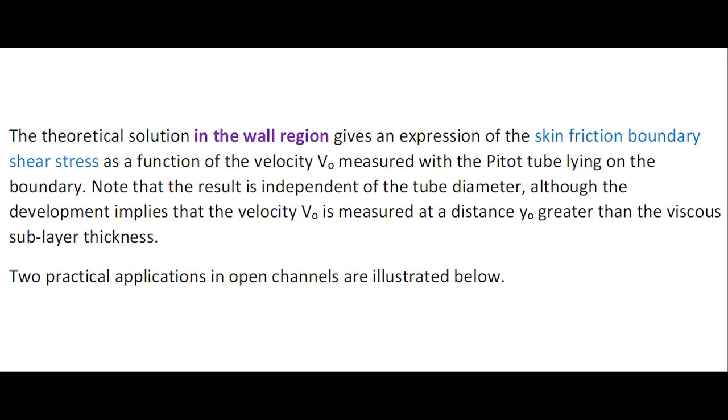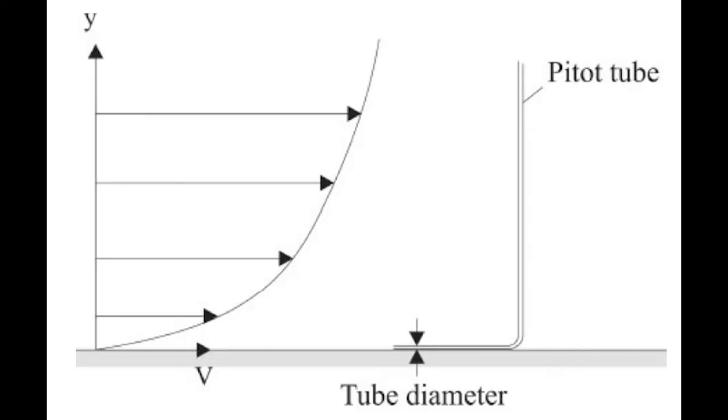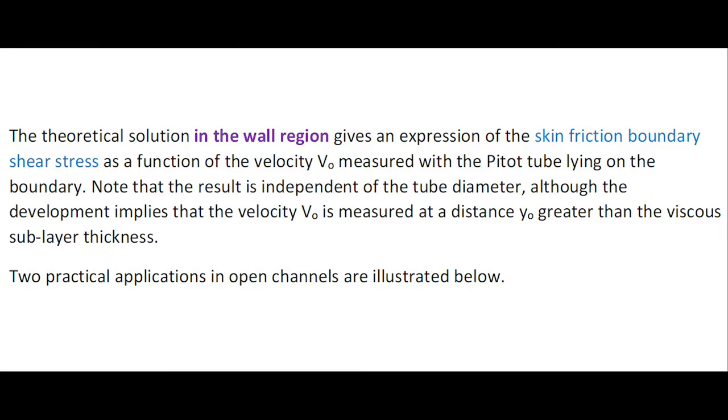The theoretical solution in the wall region gives an expression of the skin friction boundary shear stress as a function of the measured velocity by the Pitot tube lying on the boundary. The development implies that the velocity is measured at a distance greater than the viscous sub-layer thickness.